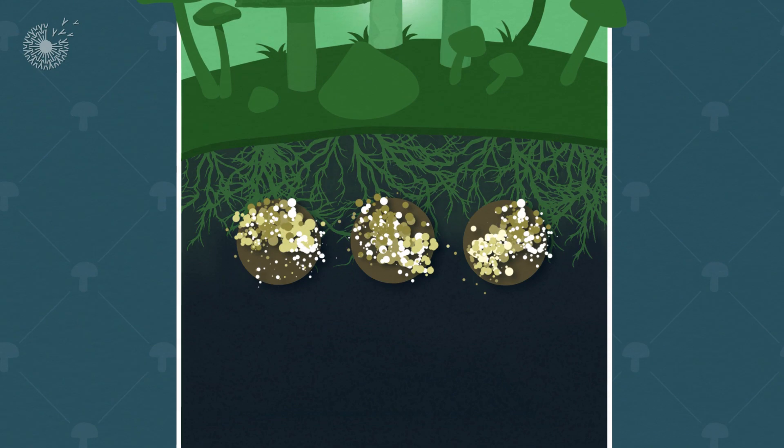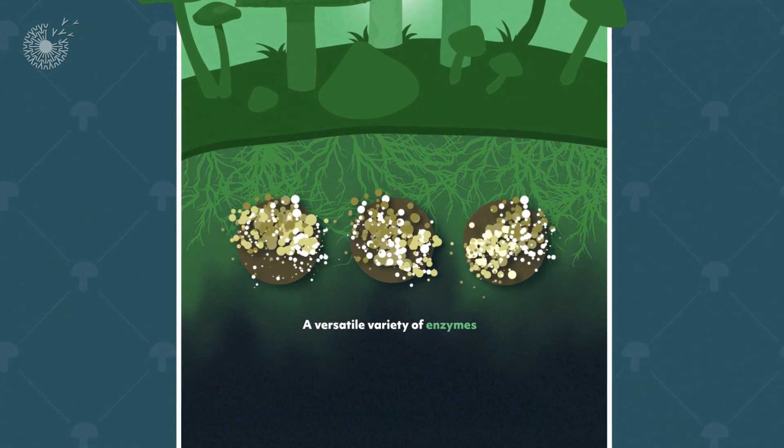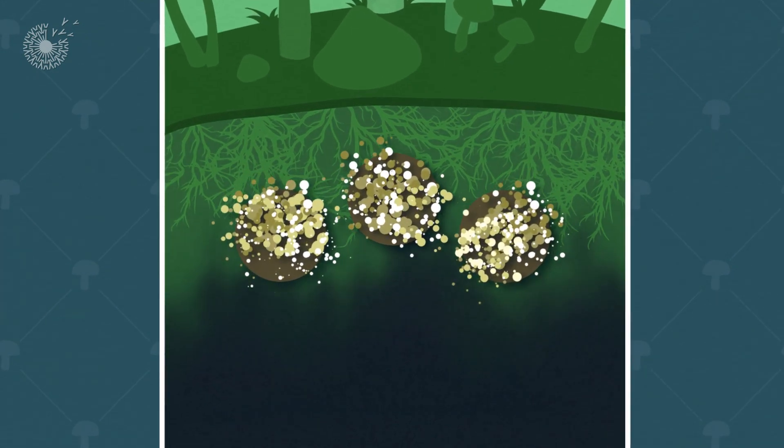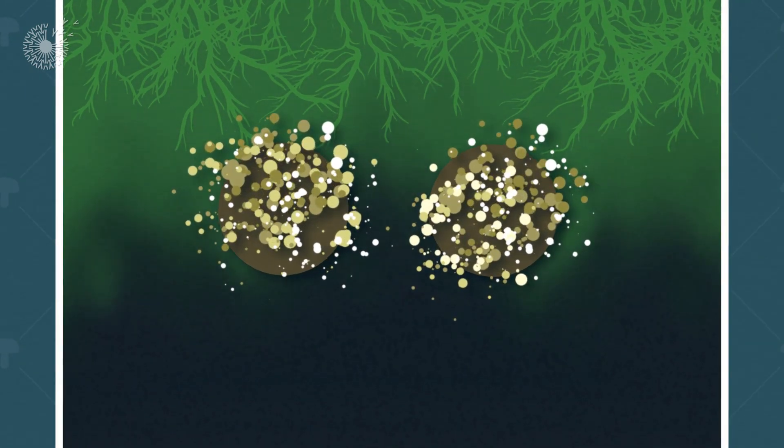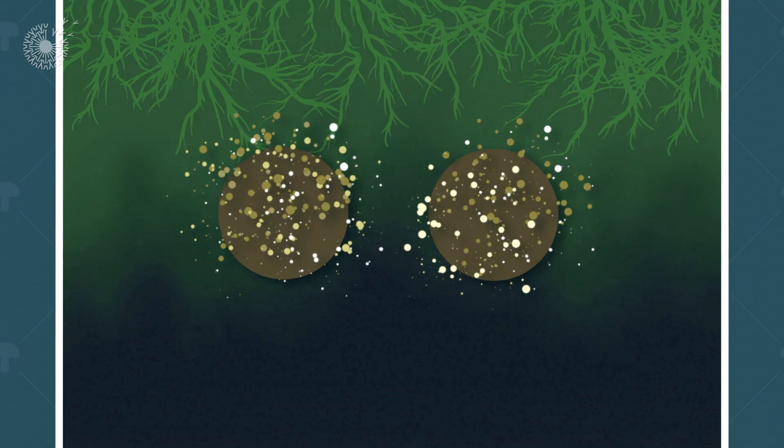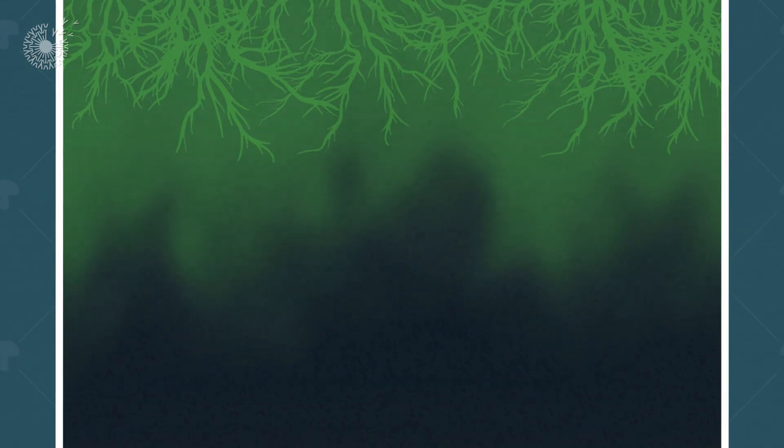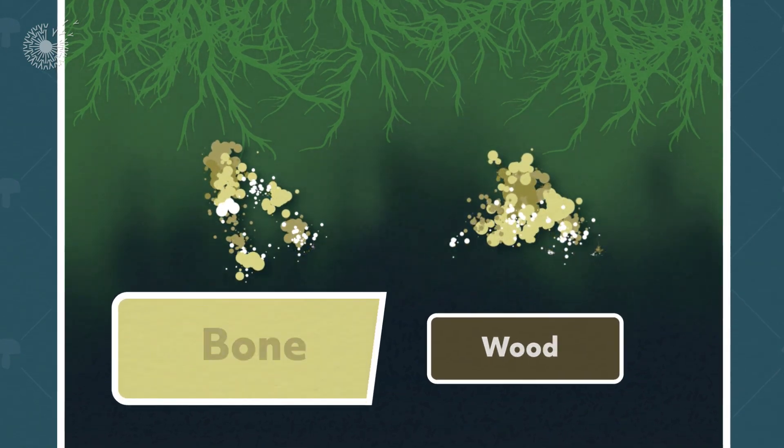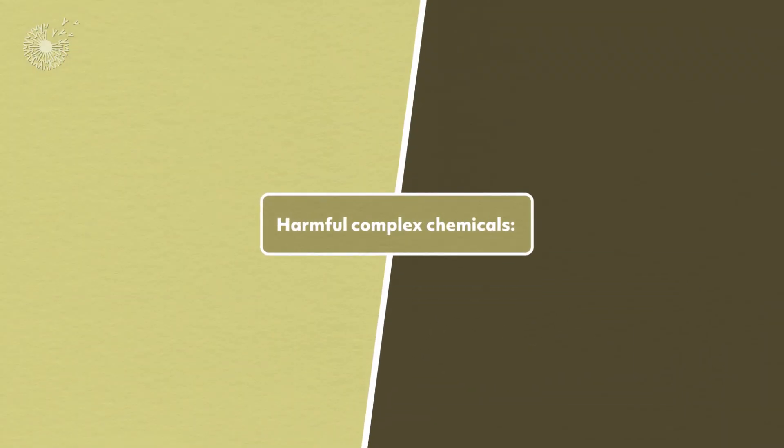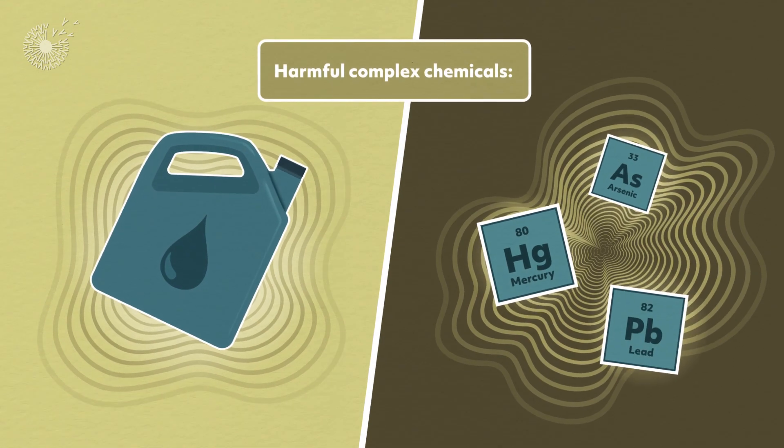And they do this by secreting a versatile variety of enzymes. These enzymes spark chemical reactions that disintegrate a wide array of the toughest plants and most complex organic materials, including bone and wood. They can even remediate other harmful complex chemicals, such as oil and heavy metals.